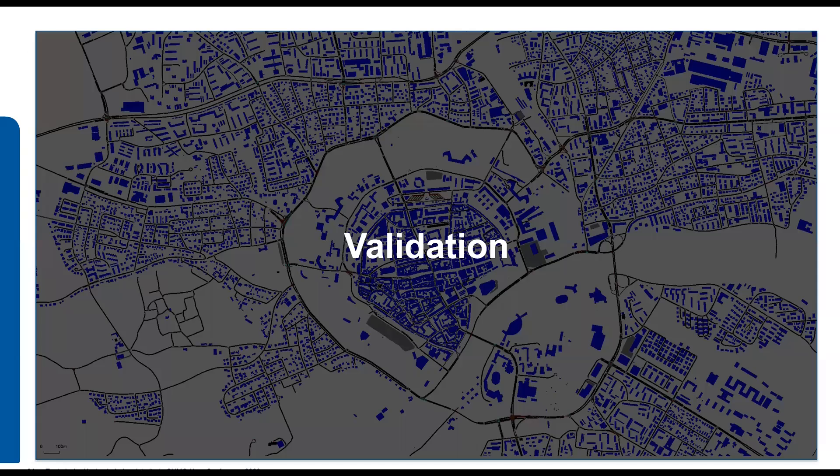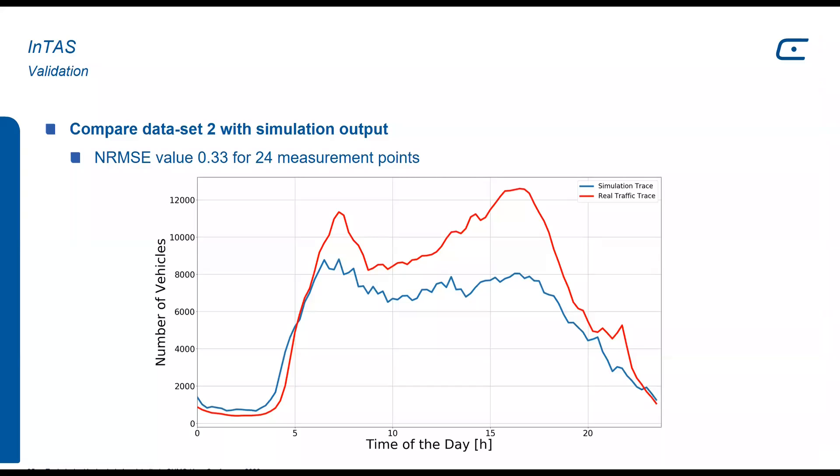For the validation method, we used the second data set we created before and we applied the NRMSE for that. We got a value of 0.33 for the 24 measurement points. This picture here compares both traces in these 24 measurement points where we have in blue the simulation trace and in red the real traffic trace. The mismatch between both traces represents our errors. As expected, the afternoon peak should be higher than the morning peak, but it's lower than the morning peak, and here is the highest error that we have on our scenario right now.